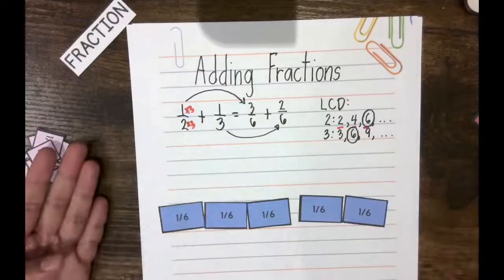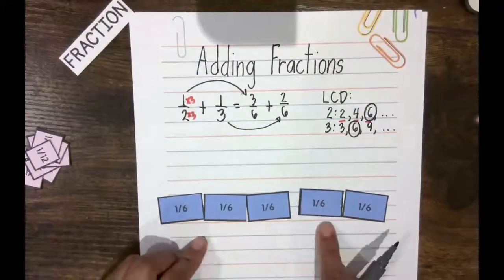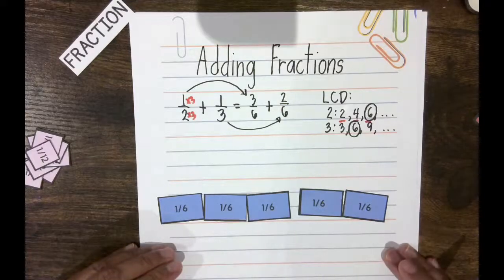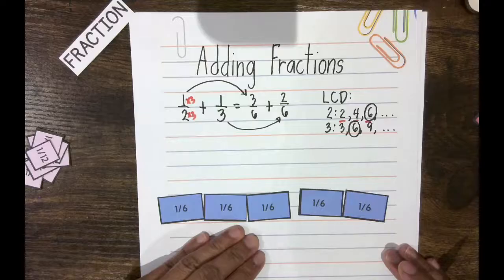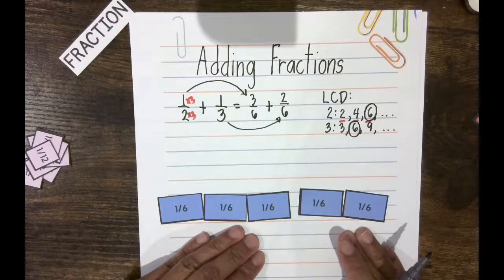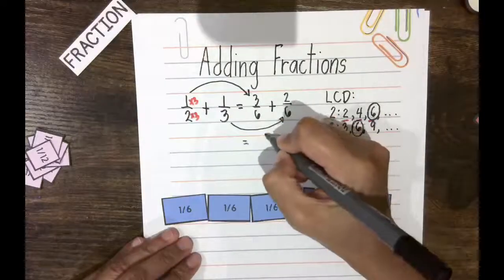But it's easier to tell how big that is if you actually express them into sets of unit fractions of same sizes. Now, all you've got to do is add all of these 1/6. So, 3/6 means 3 pieces of 1/6 plus 2/6, which means 2 pieces of 1/6 would mean you have 5 pieces of 1/6, which is equal to 5/6.